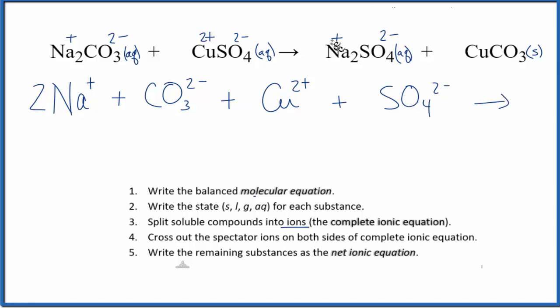For the products here, we have Na plus again, and we have that 2 there. So we have 2 of those, plus we have the sulfate ion, SO4, 2 minus, and then we have the whole copper carbonate, copper 2 carbonate, which is going to stay together because it's a solid. So this is the complete ionic equation. And from here, we can cross out the spectator ions.